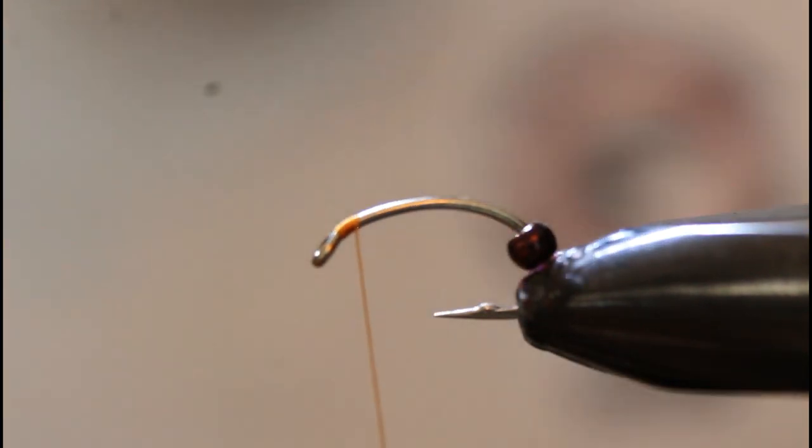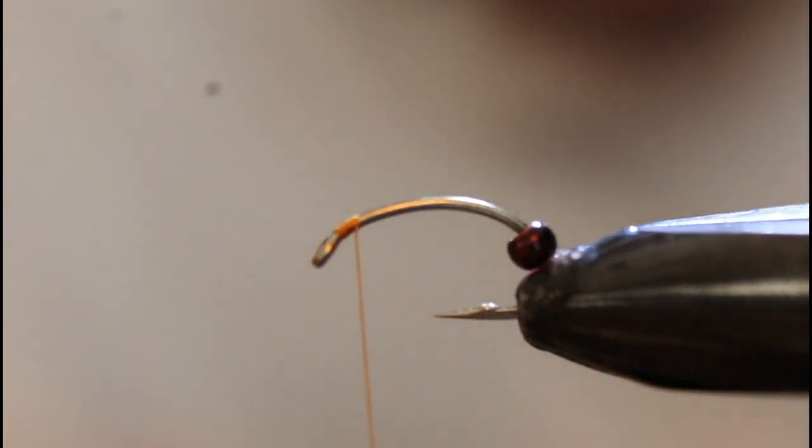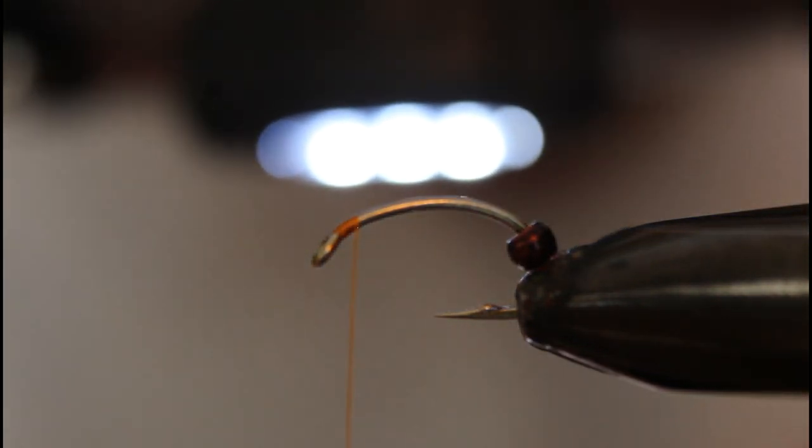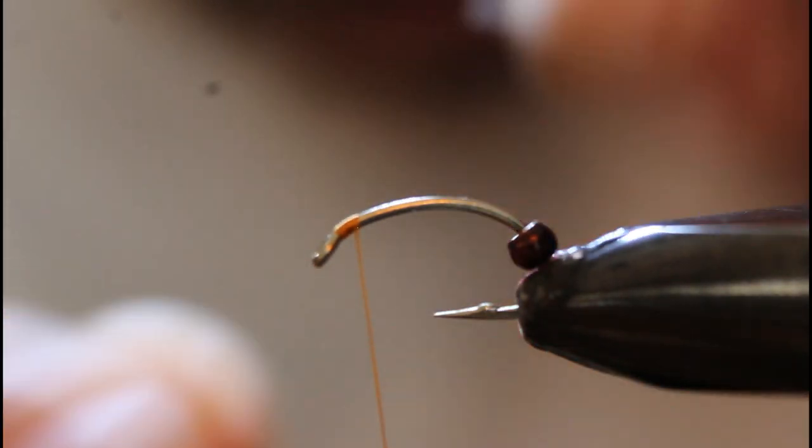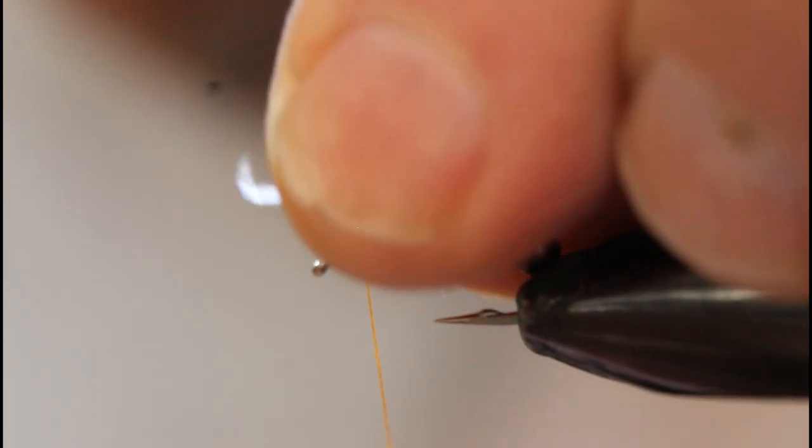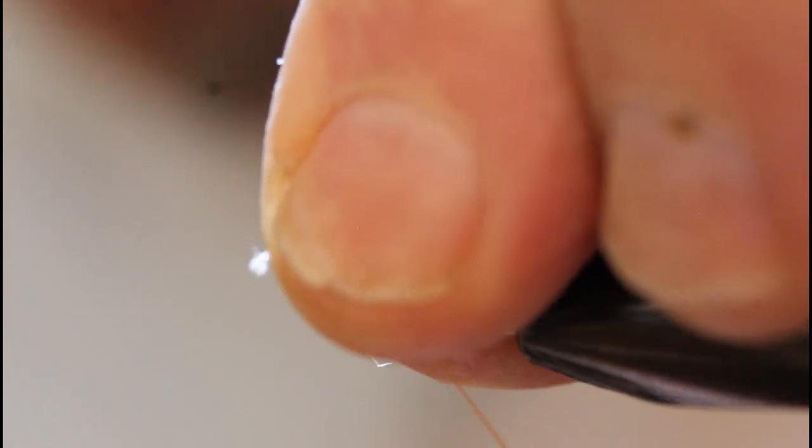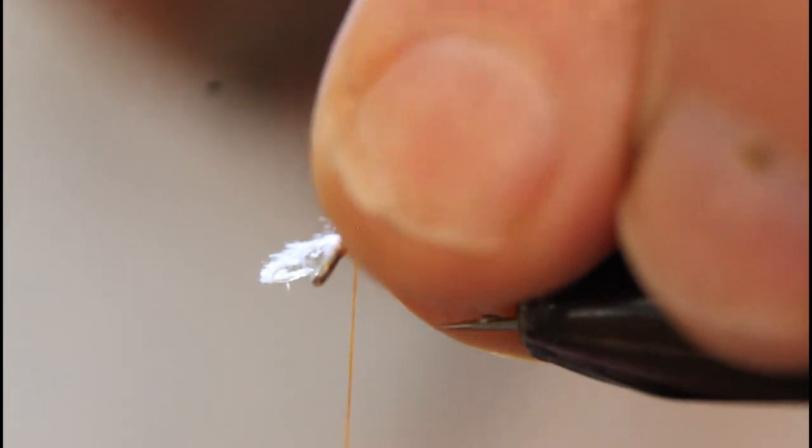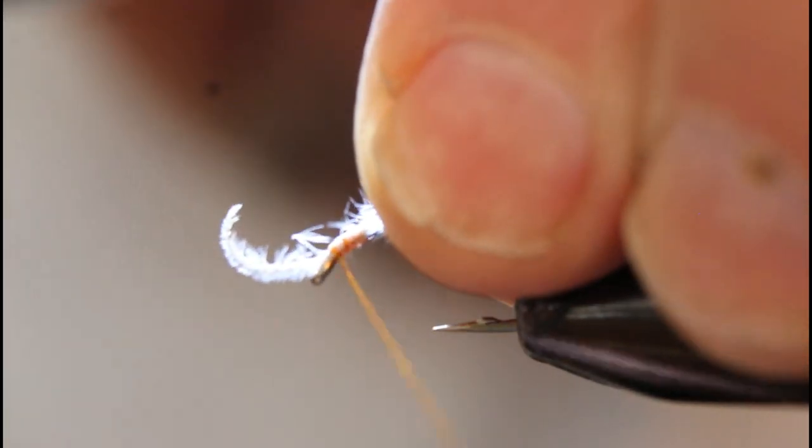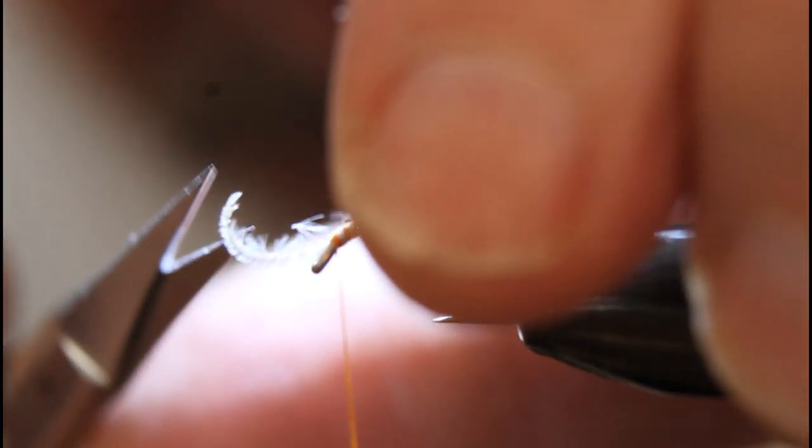Now I'm using white ostrich hurl for my gills. There's a nice benefit to using ostrich hurl - once you've tied it in place and whip finished it and removed the excess, you don't have to trim it to length. It simply is the right length right from the get-go. Now I'm just having a little trouble with the pinch and loop method - my hands are a bit dry this morning and a bit rough like sandpaper.